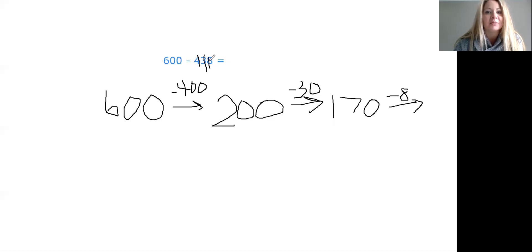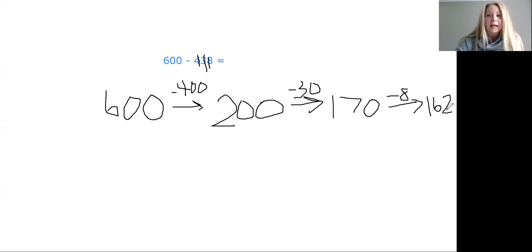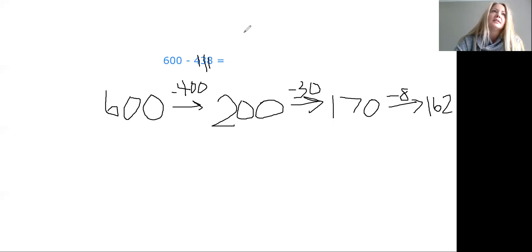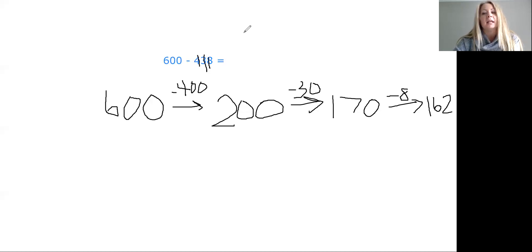I hear some of you counting backwards by ones. It's 162. Now, as an adult, I can do this mentally, and some of you who have trained your brains can do it too. You can think: 600 minus 400 is 200, 200 minus 30 is 170, 170 minus eight is 162. And that's one fantastic way to do it.